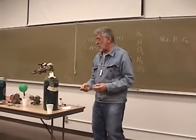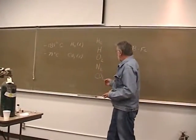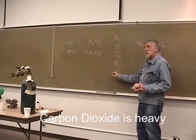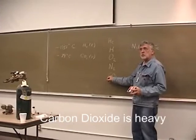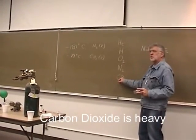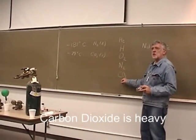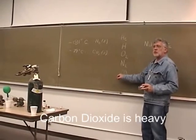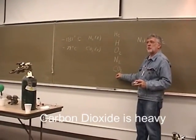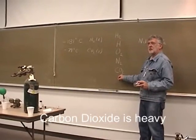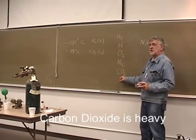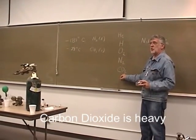So carbon dioxide, the molecule here, is heavier than air because we add up the weights. Remember the atomic weights? Carbon is 12, oxygen is 16, and another 16. So if we add 12 and 16 and 16 together, we get 44.